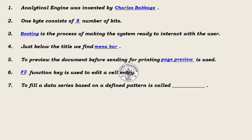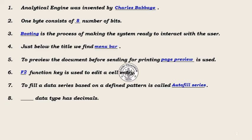Question 6: Dash function key is used to edit a cell entry — Answer: F2. Question 7: To fill a data series based on a defined pattern is called dash — Answer: Auto Fill Series. Question 8: Dash data type has decimals — Answer: Float.